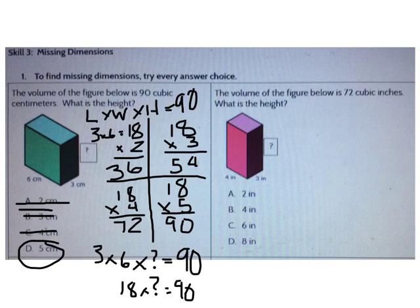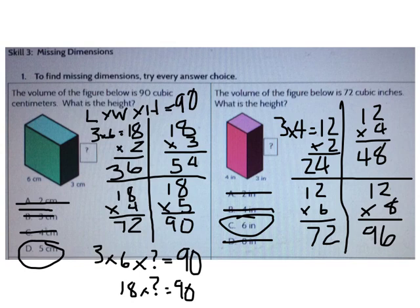Now you try one. The volume of the figure is 72 cubic inches — what is the height? The correct answer is C. 3 times 4 is 12. Trying A: 12 times 2 is 24, not correct. Trying B: 12 times 4 is 48, not correct. Trying C: 12 times 6 is 72 — that is correct. Trying D: 12 times 8 is 96, not correct. The only correct answer choice is C.